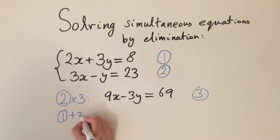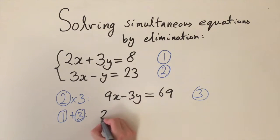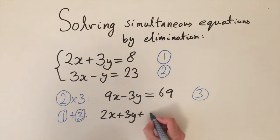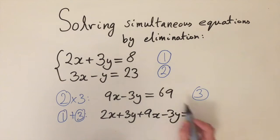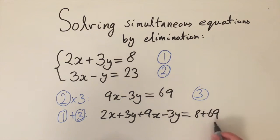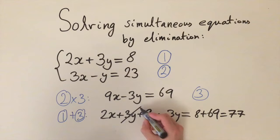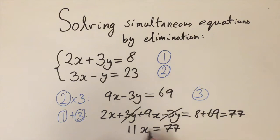We're going to add equation one and equation three, adding the left-hand sides and the right-hand sides together. We get 2x plus 3y plus 9x minus 3y, and on the right-hand side 8 plus 69 which is 77. The 3y terms cancel out, leaving 11x equals 77. Dividing both sides by 11 gives x equals 7.